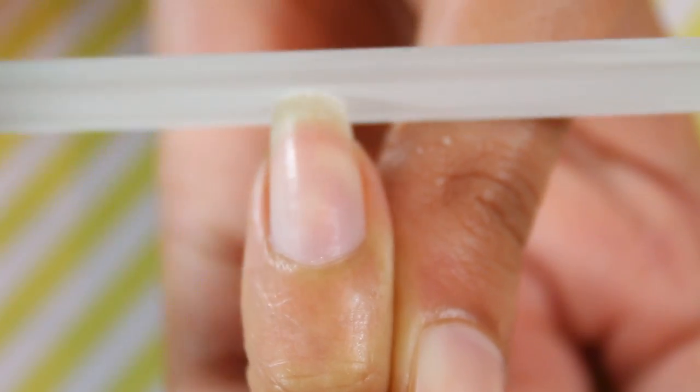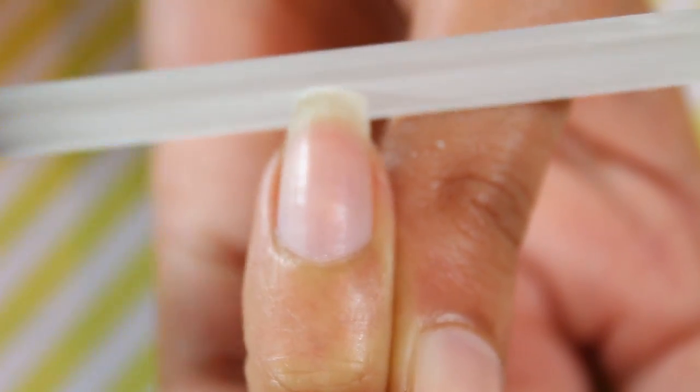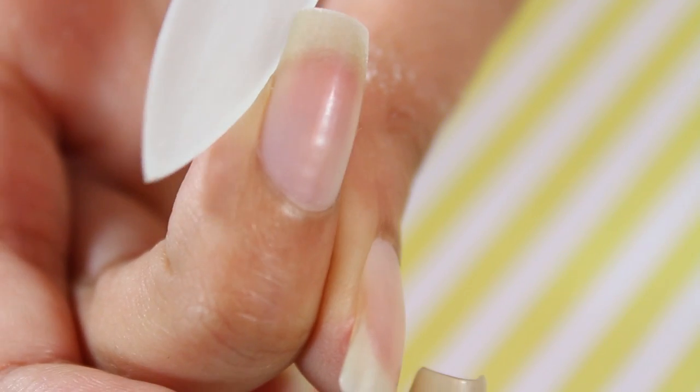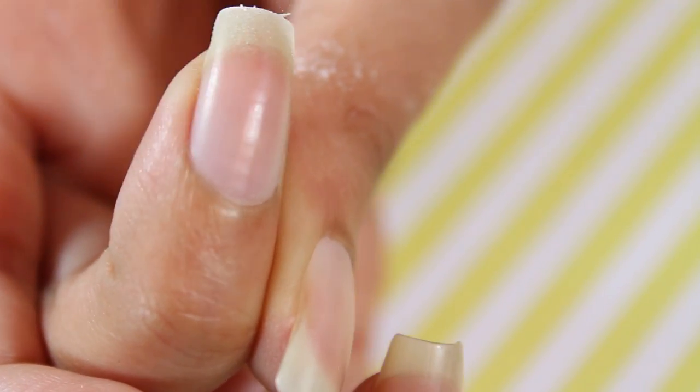But if you have thinner nails then just file them down in only one direction. This would prevent your nails from splitting. I like my nails to be square shaped so I file them straight down on the sides as well.